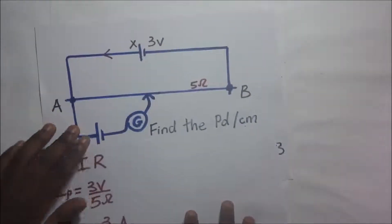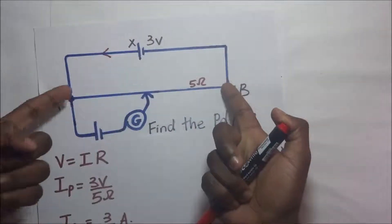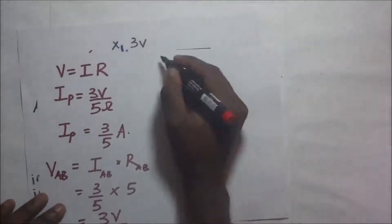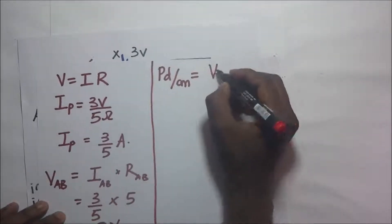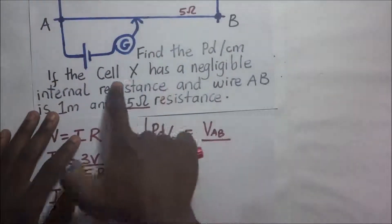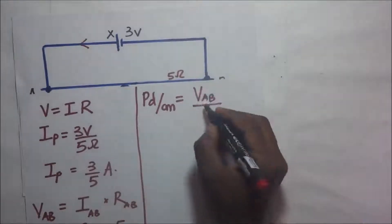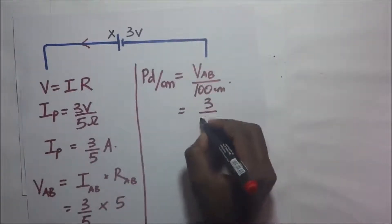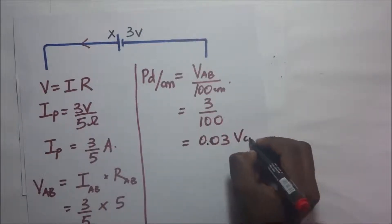The EMF of this cell is 3 volts and it is acting across one resistor of 5 ohms, so 3 volts is all acting along wire AB. Now that we have the potential difference across the wire, to find the PD per unit length — or PD per centimeter — is equal to the voltage across AB divided by the length of the wire. Since wire AB is 1 meter long, it becomes V_AB over 100 centimeters. So 3 divided by 100 gives us 0.03 volts per centimeter.